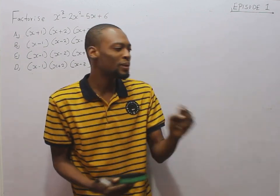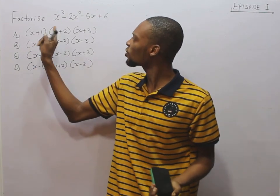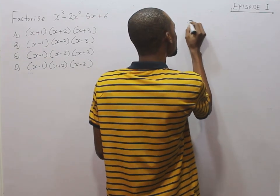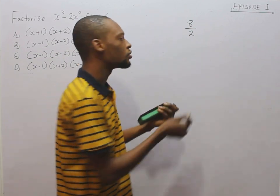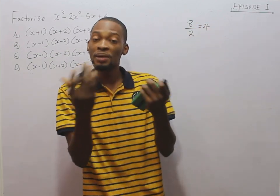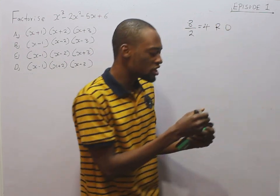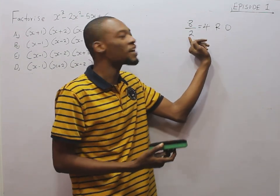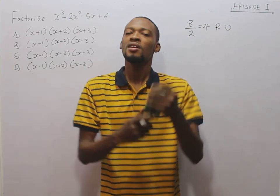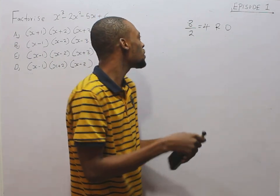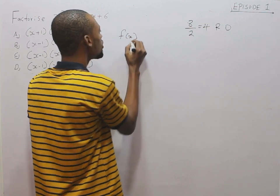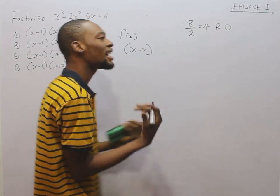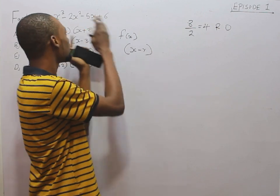This takes us to factor and remainder theory. In this case, we shall focus on the factor theory. If I say 8 divided by 2, that gives you 4, remainder 0. Which means, if you divide a particular number or value by each factor, you will get a remainder of 0. This is similar to factor theory, which says that given the polynomial function of s, if this polynomial is divided by s minus r and the remainder is 0, it simply means that s minus r is a factor.